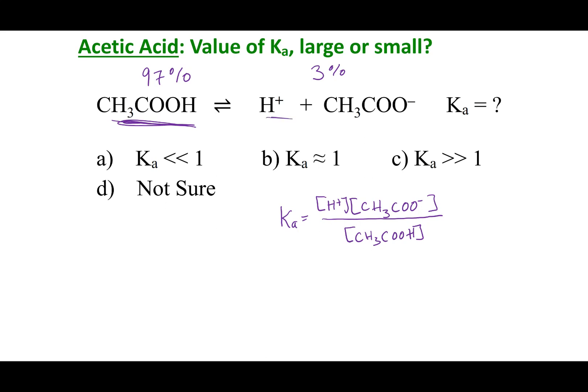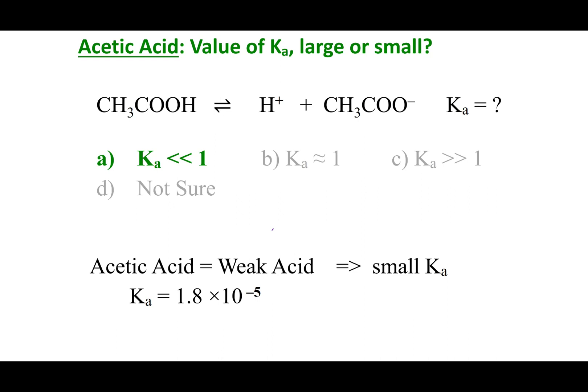But if I'm not making very many products, I got a small number divided by a big number, and this is going to get me something that is going to be less than 1. So, you guys can go ahead and look up the value. The Ka for acetic acid is a really tiny number, 1.8 times 10 to the negative 5th.